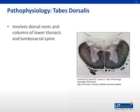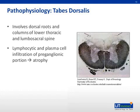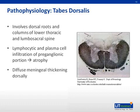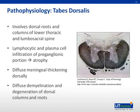In tabes dorsalis, the lesions are characteristically concentrated in the dorsal roots and dorsal columns of the spinal cord at the lumbosacral and lower thoracic areas. The preganglionic portion of the spinal cord is infiltrated by lymphocytes and plasma cells, resulting in atrophy of the posterior columns. On gross examination, there is diffuse meningeal thickening greater over the dorsal than ventral surface of the cord, diffuse lymphocytic and plasma cell infiltration of the leptomeninges, flattening of the cord due to atrophy of the dorsal columns, diffuse demyelination of the posterior columns, and degeneration of the dorsal roots, which appear gray throughout their width, as demonstrated on the right.